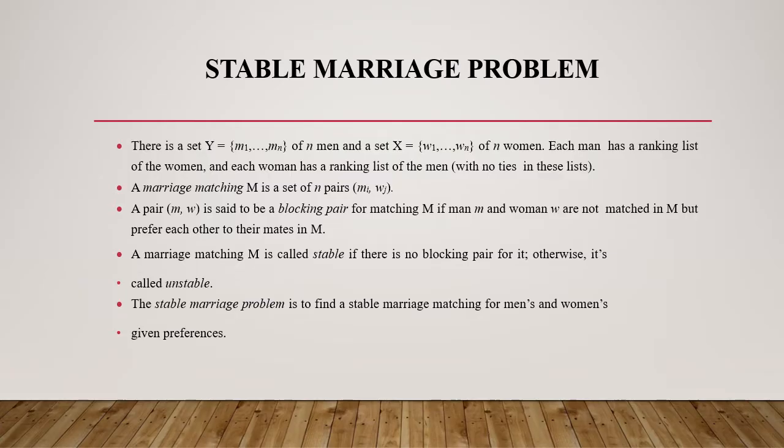A marriage matching M is stable if there is no blocking pairs for it, otherwise it is called unstable. The stable marriage problem is to find the stable marriage matching for men and women based on the preference.